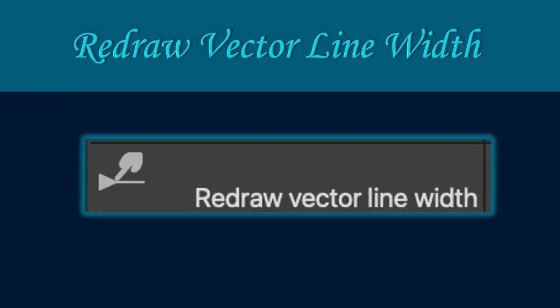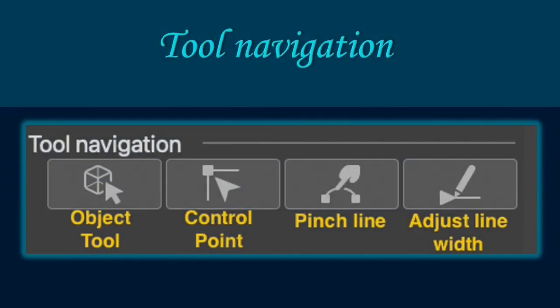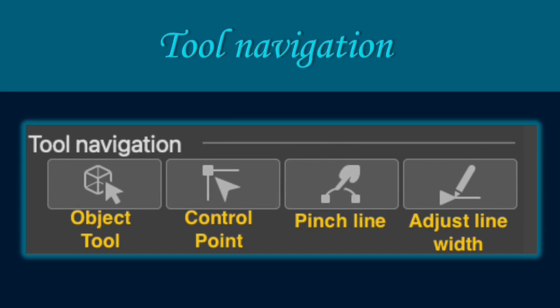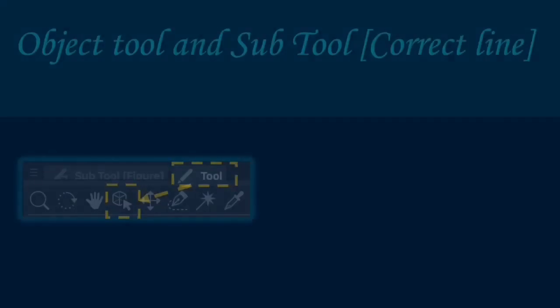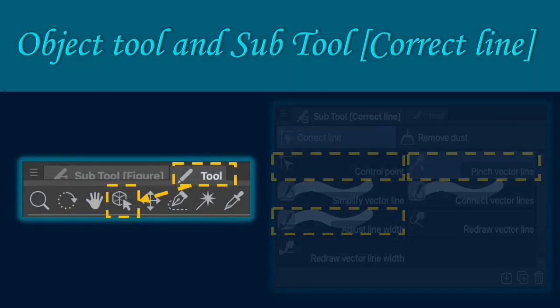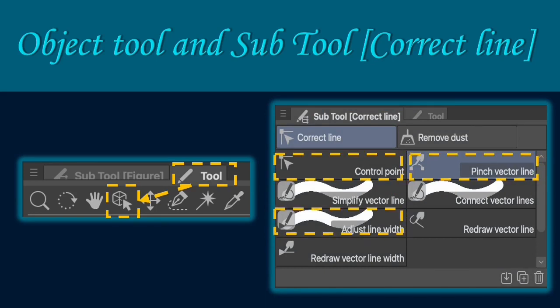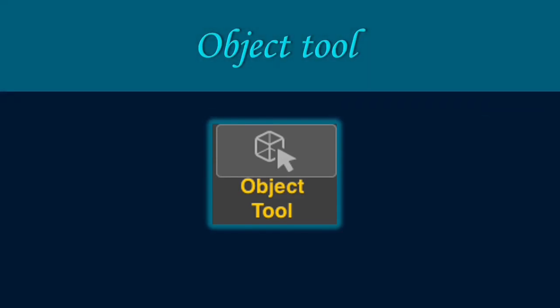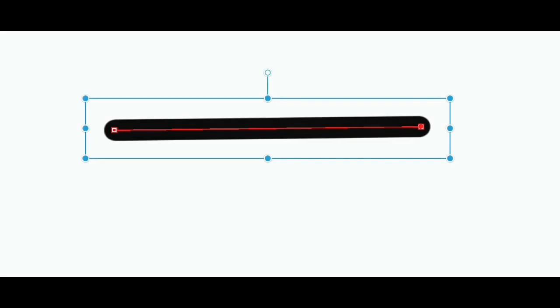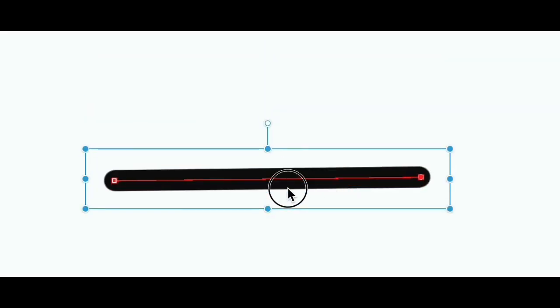The redraw vector line also allows you to adjust the width of your lines. The tool navigation comprises the tools to manipulate the lines and control points of shapes. You may see the object tool under the tool pane. The control point, pinch line and adjust line width tools are also located in the subtool correct line pane. The object tool is for selecting and moving the lines on the canvas. Here is a short feature clip to show you the function of the object tool.